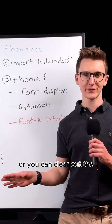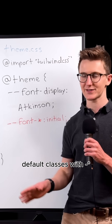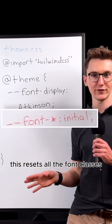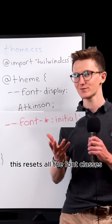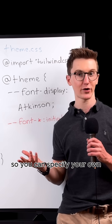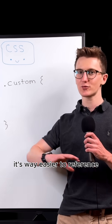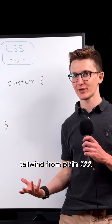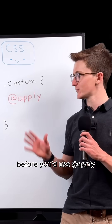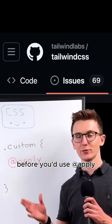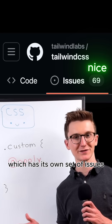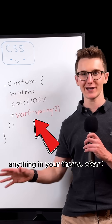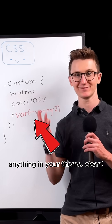Or you can clear out the default classes with dash-star. This resets all the font classes so you can specify your own. And with CSS variables, it's way easier to reference Tailwind from plain CSS. Before, you'd use @apply, which has its own set of issues. Now, you can just use var() to reference anything in your theme. Clean.